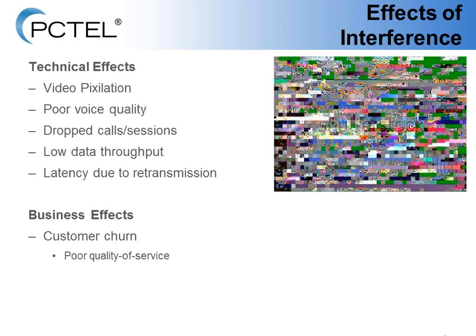Moving on to the effects of interference — there are both technical effects and business effects. The technical effects are video pixelation, poor voice quality, dropped calls or sessions, very low data throughput, and latency due to retransmission on the data link. The business effects can be even more significant, resulting in customer churn, which is caused by poor quality of service. So if interference is causing poor quality of service, it can have a real business effect and affect customer loyalty to your network.